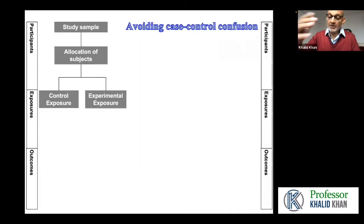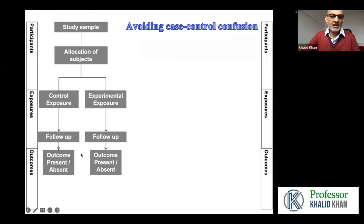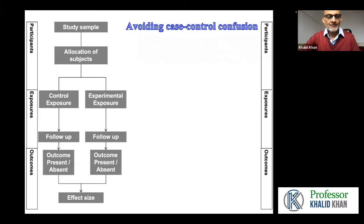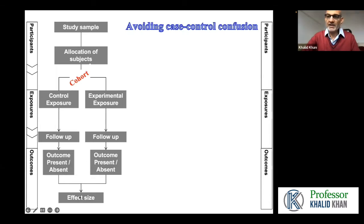To come back to our research question, we talk about the flow diagram of participants being given standard treatment or new treatment and then being followed up to know their outcome. The study I have just presented is a cohort study. Participants, after being allocated to control or new intervention, are followed up forward in time until their outcomes are measured and then an effect size is calculated.